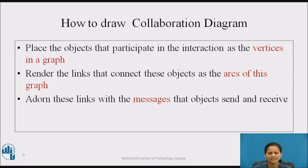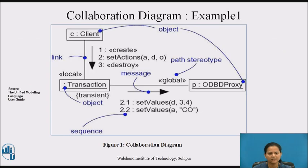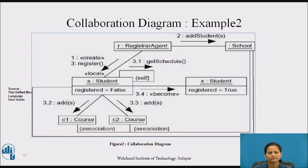Observe the collaboration diagram shown in Figure 1 to note the details discussed. Most of the time, you will model straight sequential flows of control. However, you can also model more complex flows involving iteration and branching.